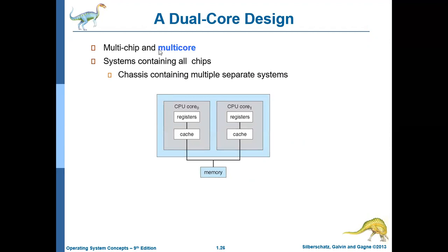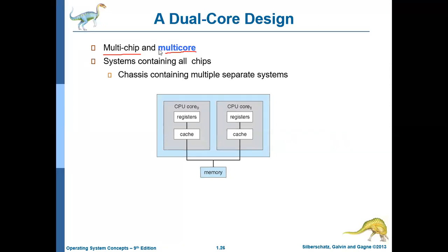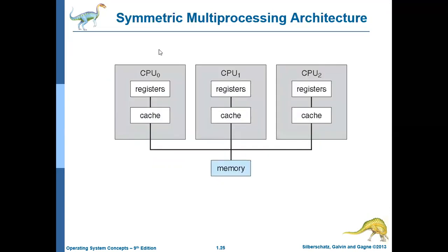The next thing we will discuss is multiprocessing. Multiprocessing can be of two types: one is called multi-chip and the other is called multi-core. Multi-chip means the previous example we discussed — this is an example of multi-chip. Why is it called multi-chip? Because CPU zero is placed in a separate chip — a separate electronic module.